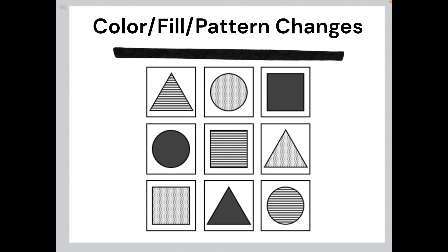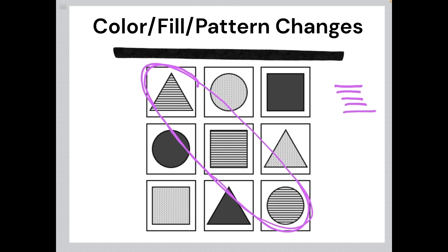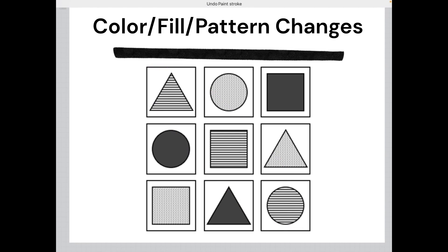In this example the logic is governed by the change in color, fill, and pattern of the shapes throughout the matrix. If we take a look at our 1-5-9 diagonal, we can see that all three elements share the same pattern: horizontal stripes. Looking at the other groups of three, elements 2, 6, and 7 share a polka dot pattern, and elements 3, 4, and 8 all share a solid black fill.